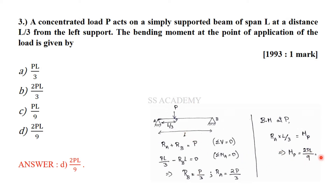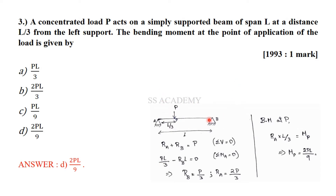The bending moment is a sagging bending moment. Sagging means the top surface gets contracted, producing a smiley-shaped deflection. If it were hogging, the deflection would be opposite — hogging looks like a hump, sagging like a smile.